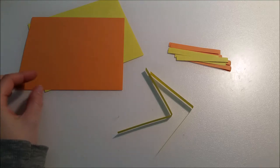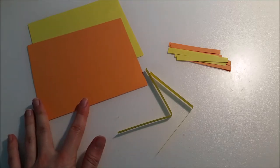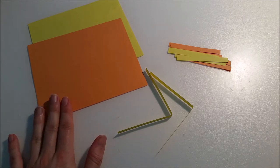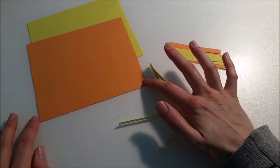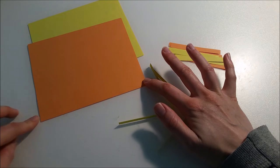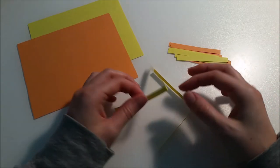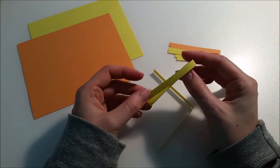The first thing you need to do is cut stripes. I used this simple origami paper which is about 15 centimeters in length and I cut out 7 millimeter stripes.